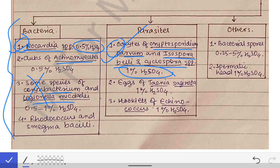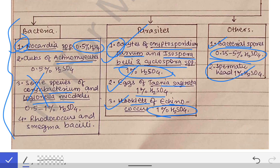Also remember: the eggs of Taenia saginata are 1% H₂SO₄ acid-fast, hooklets of Echinococcus are also 1% H₂SO₄ acid-fast, bacterial spores are 0.25–0.5% H₂SO₄ acid-fast, and the spermatic head is also 1% H₂SO₄ acid-fast — this last fact is commonly asked in exams.